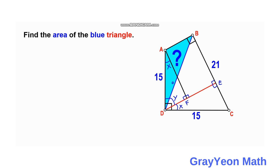If we focus on triangle AFD, we have a 90-degree angle, angle X, and these two are consecutive angles with a 15-unit non-included side. Comparing this with triangle EDC, we also have a 90-degree angle, angle X, and a non-included side of 15 units. Therefore, these two triangles are congruent: triangle EDC is congruent with triangle AFD.